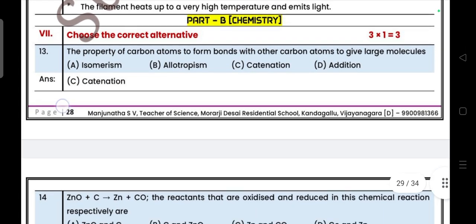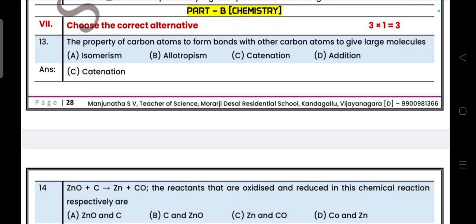Next, Part B Chemistry. Part 3, multiple choice questions. A property of carbon atoms to form a bond with other carbon atoms is called catenation. Question number 14.